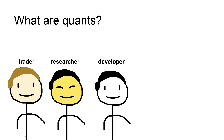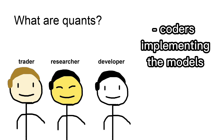Next up, Quant Developers. Quant Developers are the ones that build the tech behind the trading system. They are the coders who make it all work. They have strong computer science foundations in Python, C++, and sometimes languages like OCaml, which is popular at Jane Street.